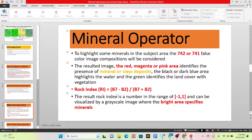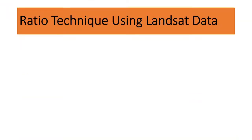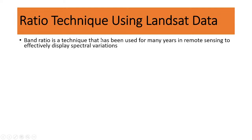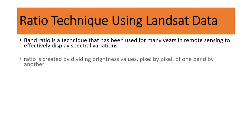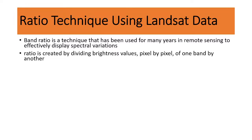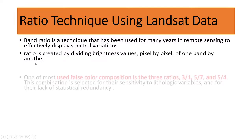We are also using different types of ratio techniques using Landsat data to identify rock. Band ratio is a technique that has been used for many years in remote sensing to effectively display spectral variation. A ratio is created by dividing the brightness values, pixel by pixel, of one band by another band.